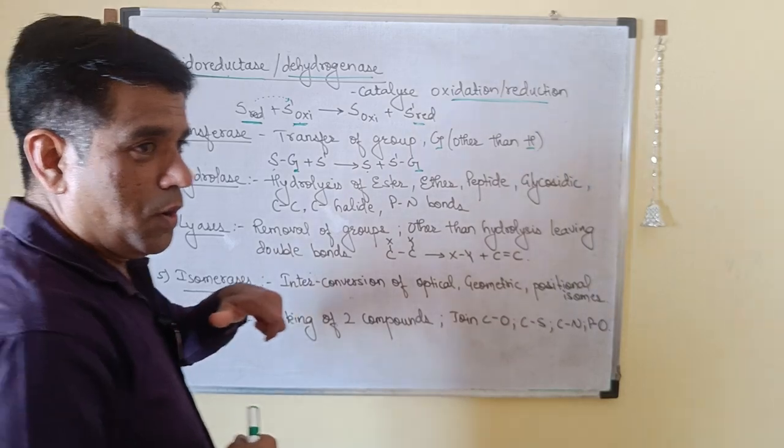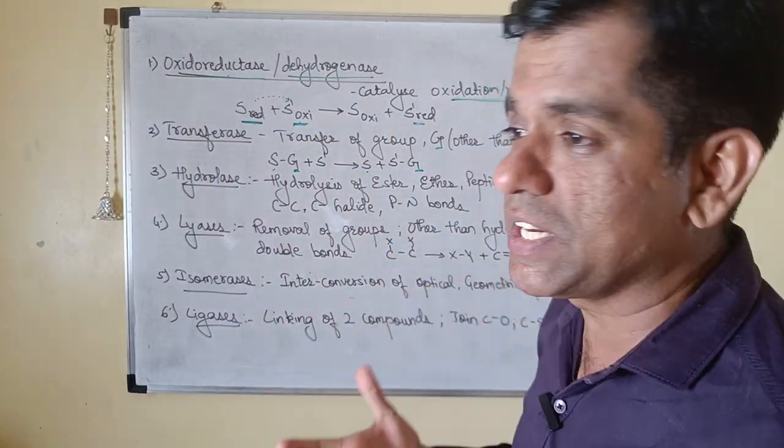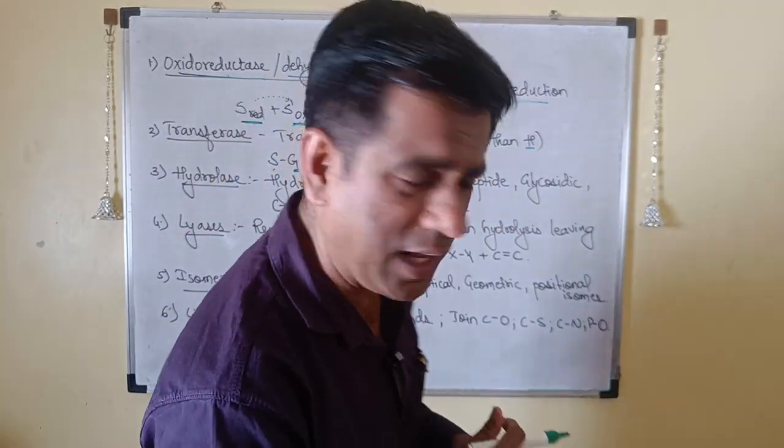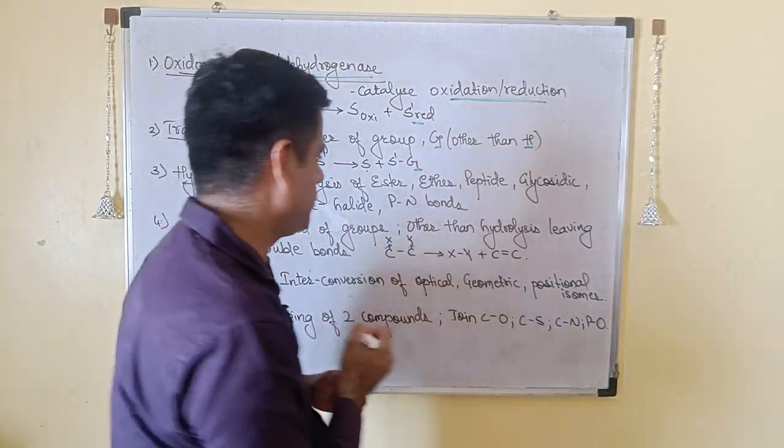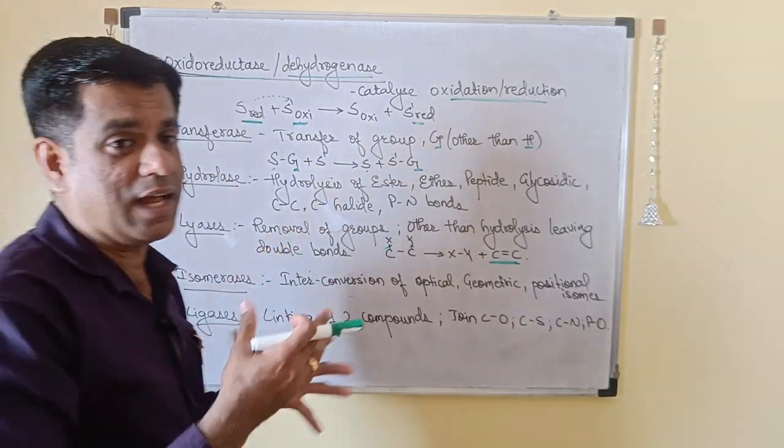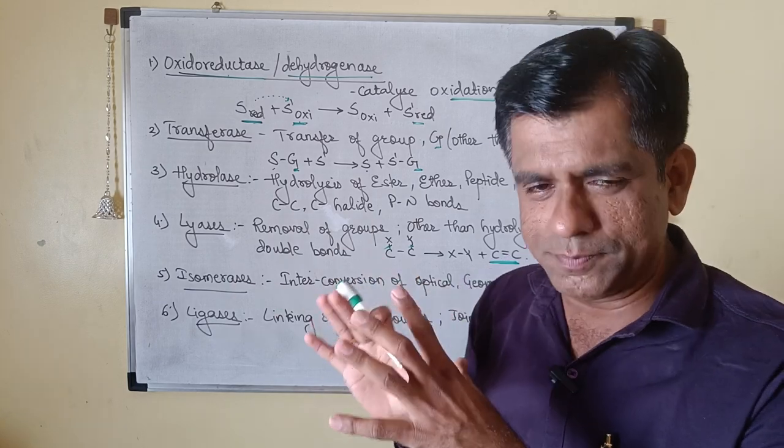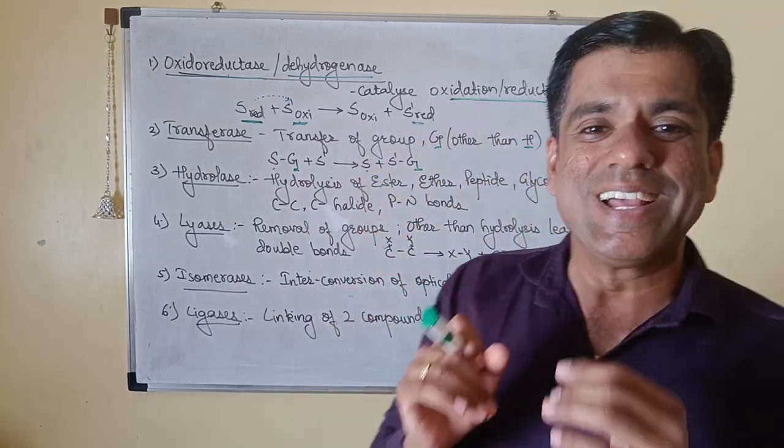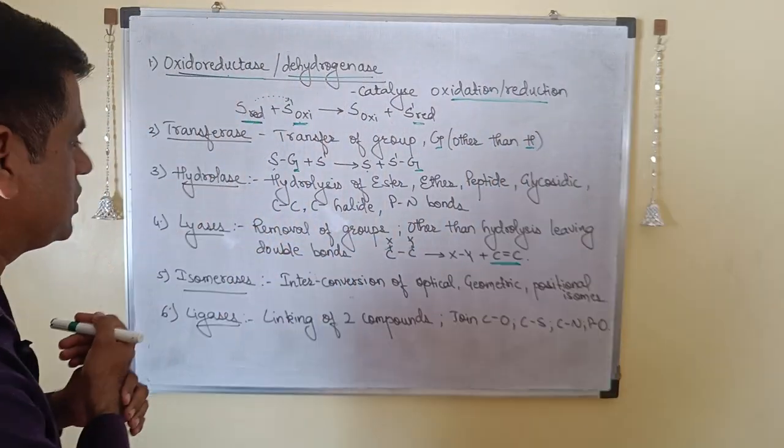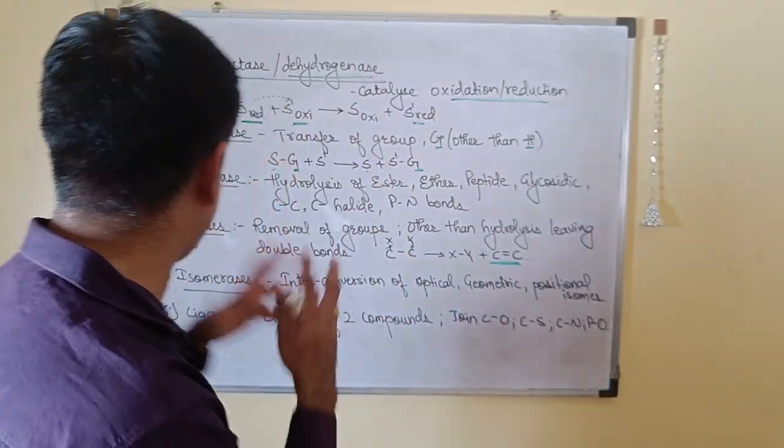Lyase. When you are hydrolyzing the bonds, you are removing the groups and you are introducing double bonds. Like here you can see that this X was removed, this Y was removed and you form a double bond here. So removal of a group by a mechanism other than hydrolysis. If you are removing the group then that is what is called as your lyase. So removing of the group and then introducing the double bond that is your lyase.